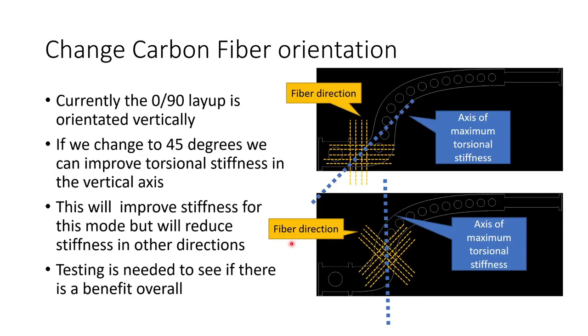So currently the way the arm is cut the 0-90 layup of the carbon fiber is orientated vertically which means that we have half the carbon fibers in this vertical direction and half the carbon fibers in this horizontal direction. And it turns out that when you orientate the carbon fibers in this way you get the maximum torsional stiffness at 45 degrees to the directions of the two fibers. And I've shown that here with this blue dotted line. If we instead changed the orientation of the carbon fibers to be at 45 degrees then that would provide a significant improvement in the torsional stiffness in the vertical axis.